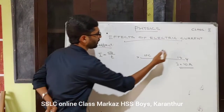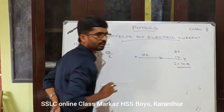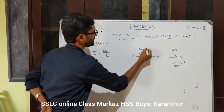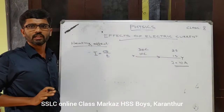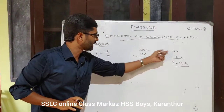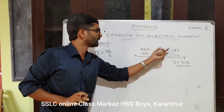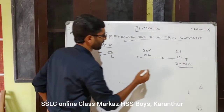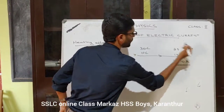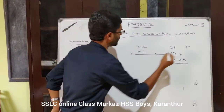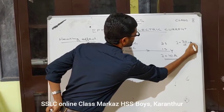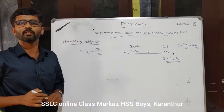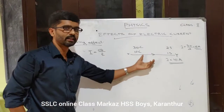Let's do another calculation. In two seconds, 30 Coulomb charge flows through a conductor. Then I equals Q by T, that means I equals 30 by 2, which equals 15 Ampere. So 15 Ampere of current is produced.